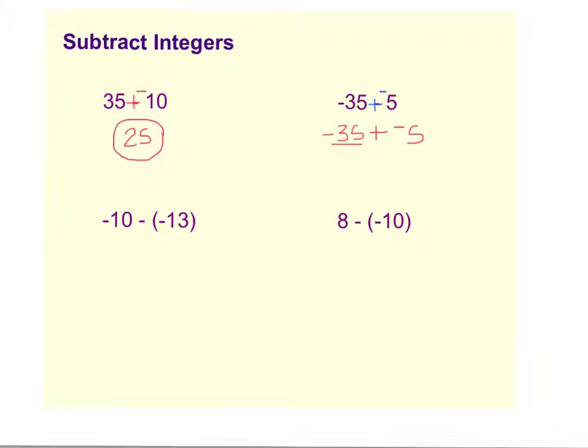two integers that have the same sign. So if they have the same sign you add them together, 35 plus 5 is 40 and you keep the same sign of negative. So our answer is negative 40.